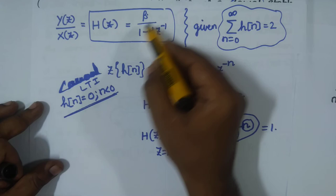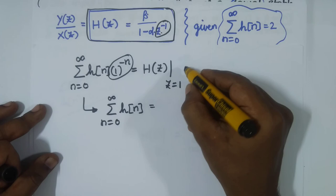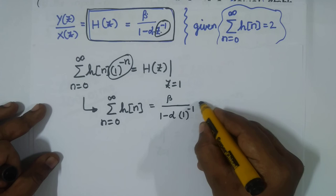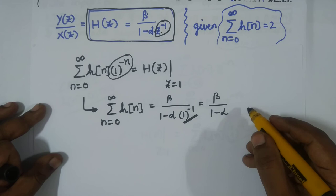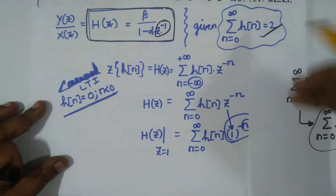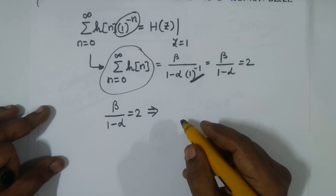Plugging z = 1 into H(z) = β/(1 − α·z⁻¹): since z⁻¹ = 1⁻¹ = 1, we get H(1) = β/(1 − α). The given condition says this equals 2, so β/(1 − α) = 2. We now have a relationship between α and β.